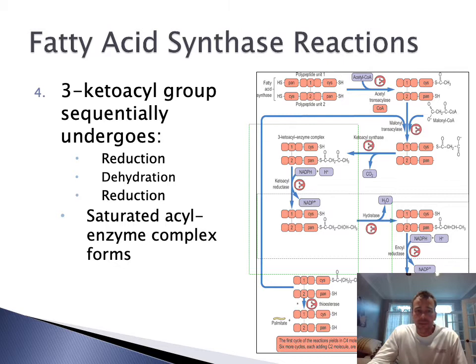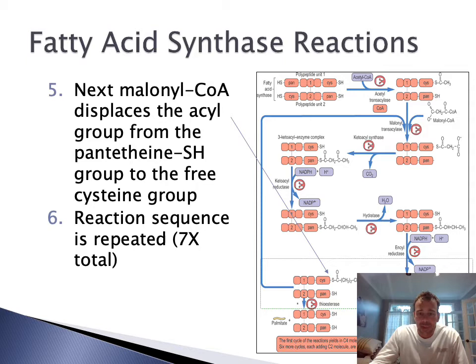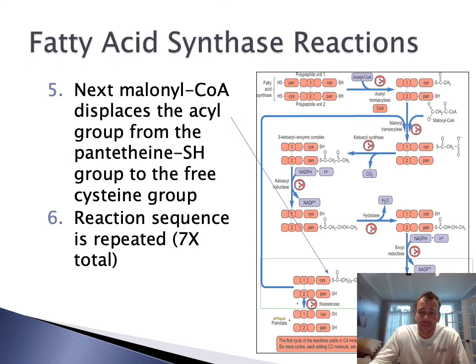In the next step, the three-ketoacyl group subsequently undergoes reduction, dehydration, and then reduction again. Then malonyl-CoA displaces the acyl group from the pantothene SH group to the free cysteine group — so a transacylase moves this group from the tail portion to the head portion, leaving a free cysteine group on the tail side. This is very similar to what occurred before, except we now have two carbon units longer. You can repeat the whole cycle to essentially build this chain up, repeating it up to seven times to get up to 16 carbon units.